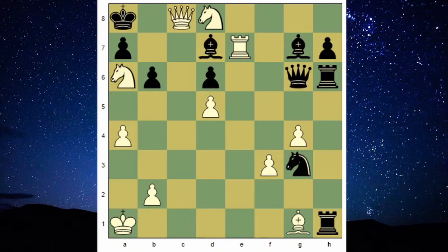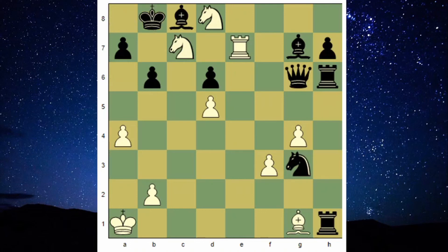So queen takes c8 check, bishop takes c8, knight to c7 check, king to b8, knight to c6 check, king to b7, knight to b5 check. If king goes to either a6 or a8, then rook to a7 is checkmate.